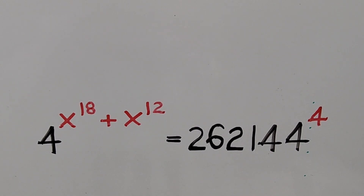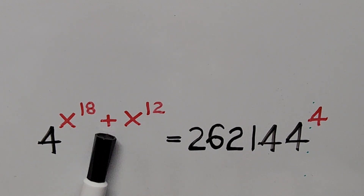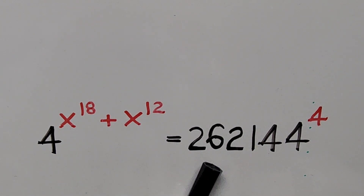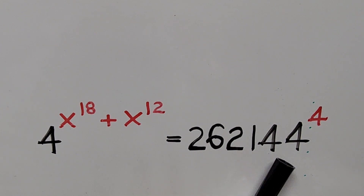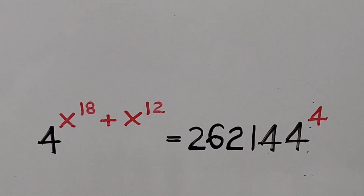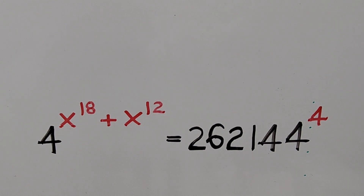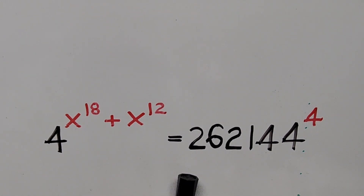Hello everyone, we have the exponential equation 4 to the power of x to the power of 18 plus x to the power of 12 equals 262,144 to the power of 4. In this video we'll be solving for the real values of x. For those new to my channel who have not subscribed yet, please hit the like button or subscribe for more interesting and informative videos. Now let's start solving.